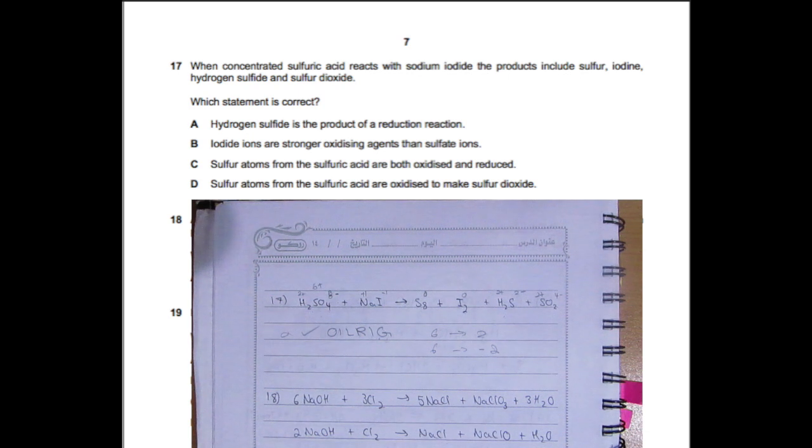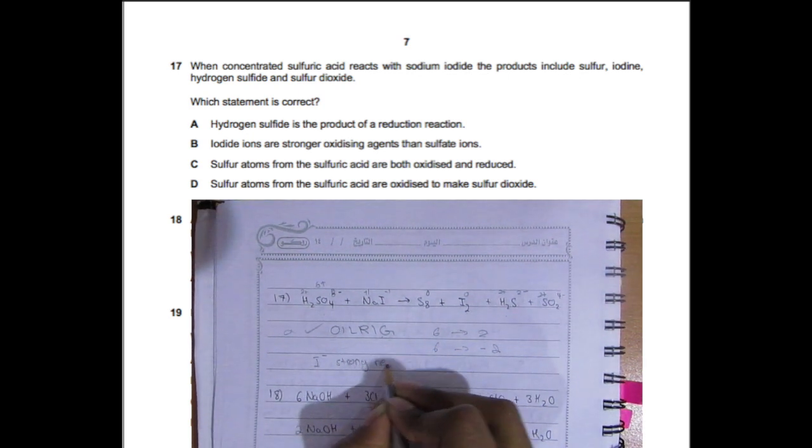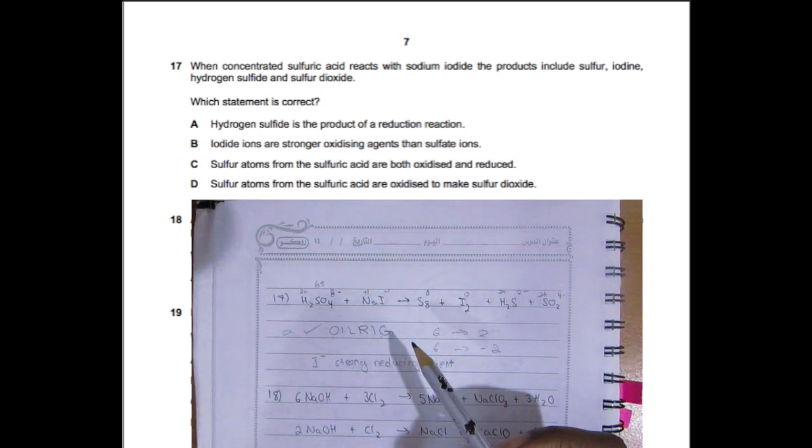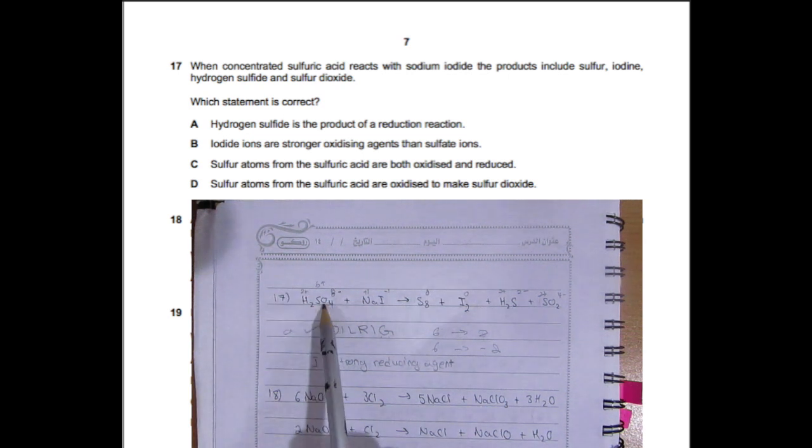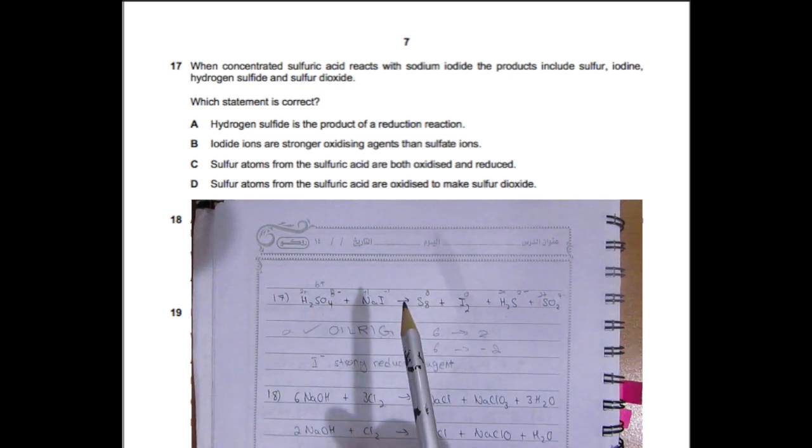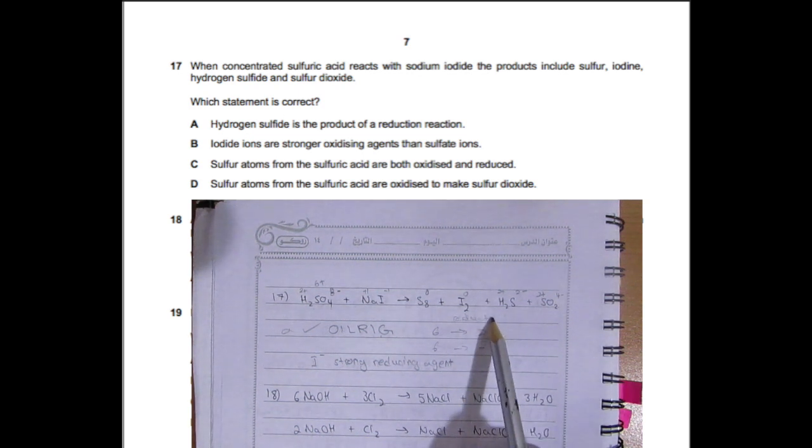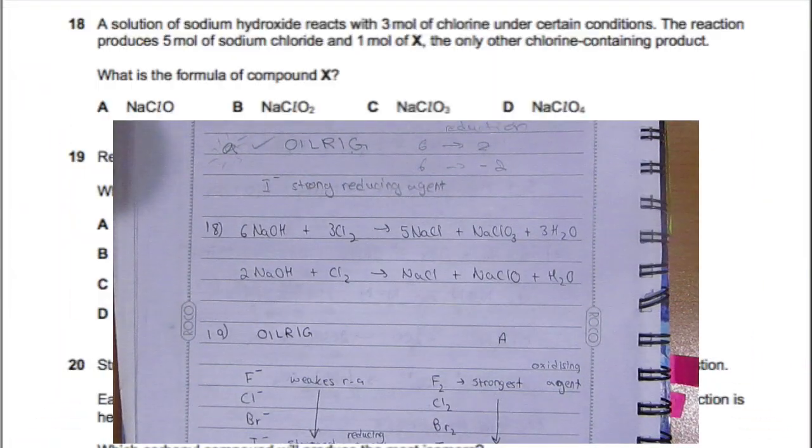B: Iodide ions are stronger oxidizing agents than sulfate ions—that's not true. Iodide ions are strong reducing agents, not oxidizing agents. C: Sulfur atoms from the sulfuric acid are both oxidized and reduced—no, it's only reduced like we stated before. D: Sulfur atoms from the sulfuric acid are oxidized to make sulfur dioxide—not true. They are reduced. A is your only option.